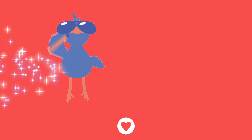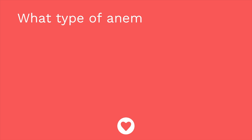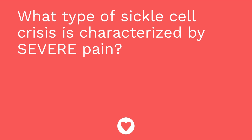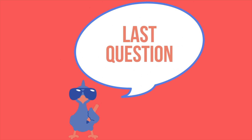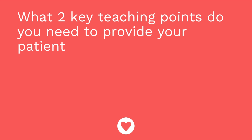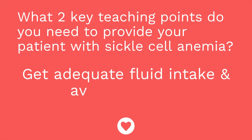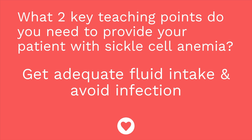Time for a quiz! Question one: what type of anemia is caused by a lack of intrinsic factor, which impairs absorption of B12? The answer is pernicious anemia. Question two: what type of sickle cell crisis is characterized by severe pain? The answer is a vaso-occlusive crisis. Question three: what two key teaching points do you need to provide your patient with sickle cell anemia? The answer is get adequate fluid intake and avoid infection. Avoiding dehydration and avoiding infection are the key priorities for sickle cell patients.